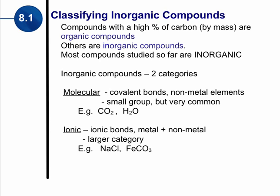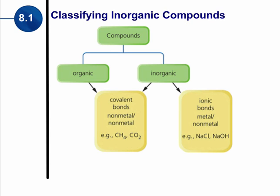And if we were to look at this in a chart form, here's a situation where we could classify compounds, either organic or inorganic. And if they're inorganic, they can be one of two categories, covalent or ionic. But it's still metal versus non-metal.